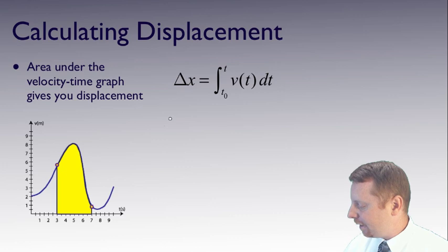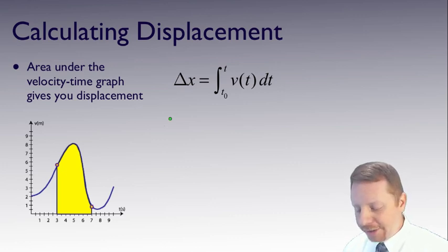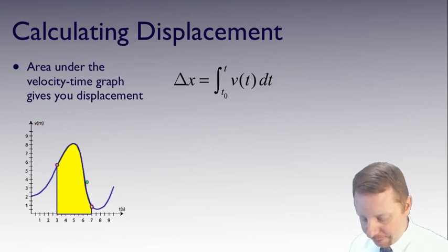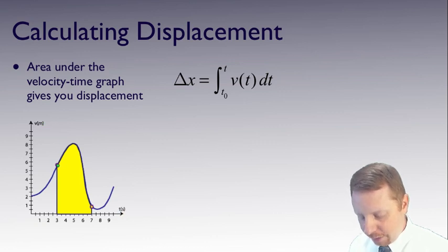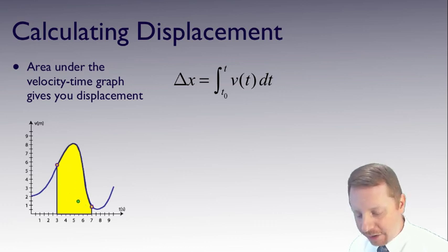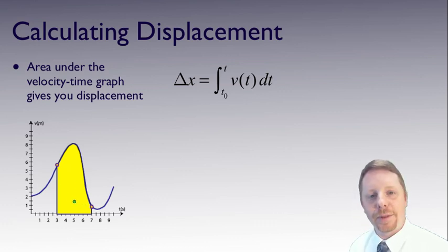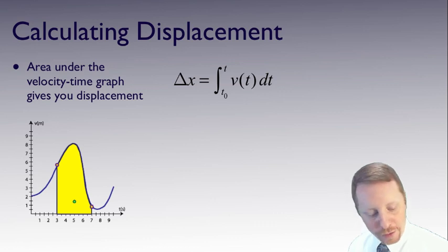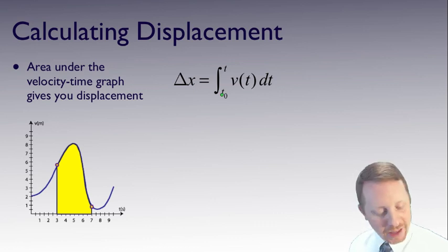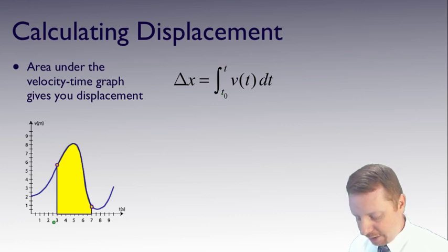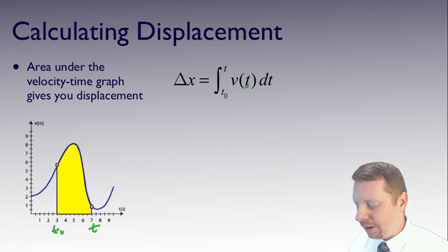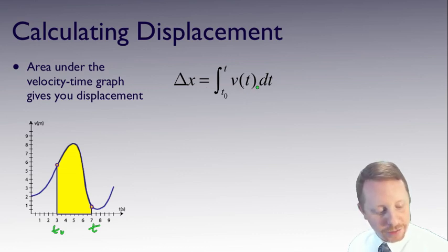The area under the velocity-time graph gives you displacement. So if we wanted to know the displacement of an object from a velocity versus time graph — where velocity is in meters per second and time is in seconds — we go between time 3 and 7 seconds and take the area under the graph. That area tells you the displacement over that time interval. Formally, delta x equals the integral from t0 to some final time t of the velocity function v(t) dt.